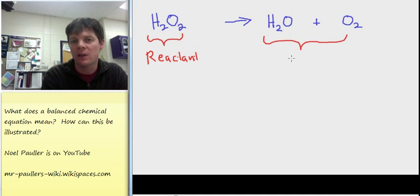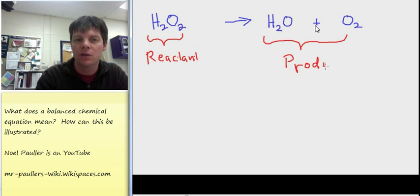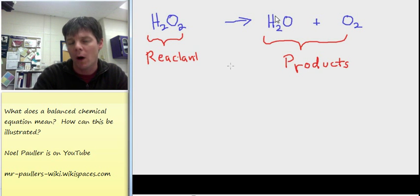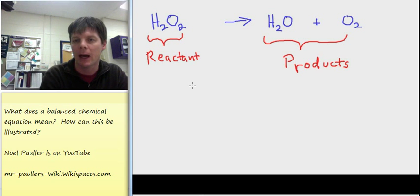Now, the two substances that we see after the arrow, these are the products of the chemical reaction. And the plus sign tells you that there are, in fact, two different chemical substances. One is a compound, water. The other one is an element, the oxygen gas, which is a diatomic element. So we've identified the reactant and the products.